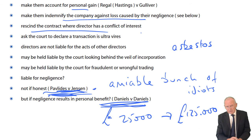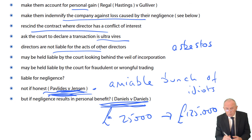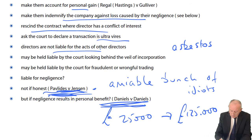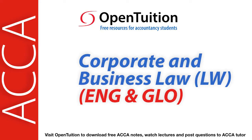We can rescind the contract where the directors have been guilty of a conflict of interest, or we can ask the court to declare a transaction as ultra vires. Directors are not liable for the acts of other directors — unlike partnerships — so if one director is fraudulent it doesn't mean all directors are fraudulent. However, the court may look behind the veil of incorporation, as they did in the case of Guildford Motor Company and Horne, where Mr. Horne was a shadow director.